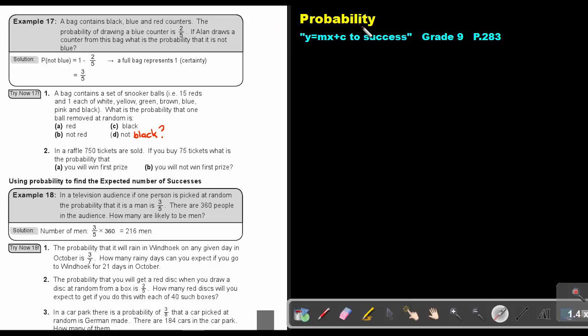Part 13, probability. You will find this on page 283 in the Namibia Mathematics Grade 9 textbook, Y equals MX plus C to success.